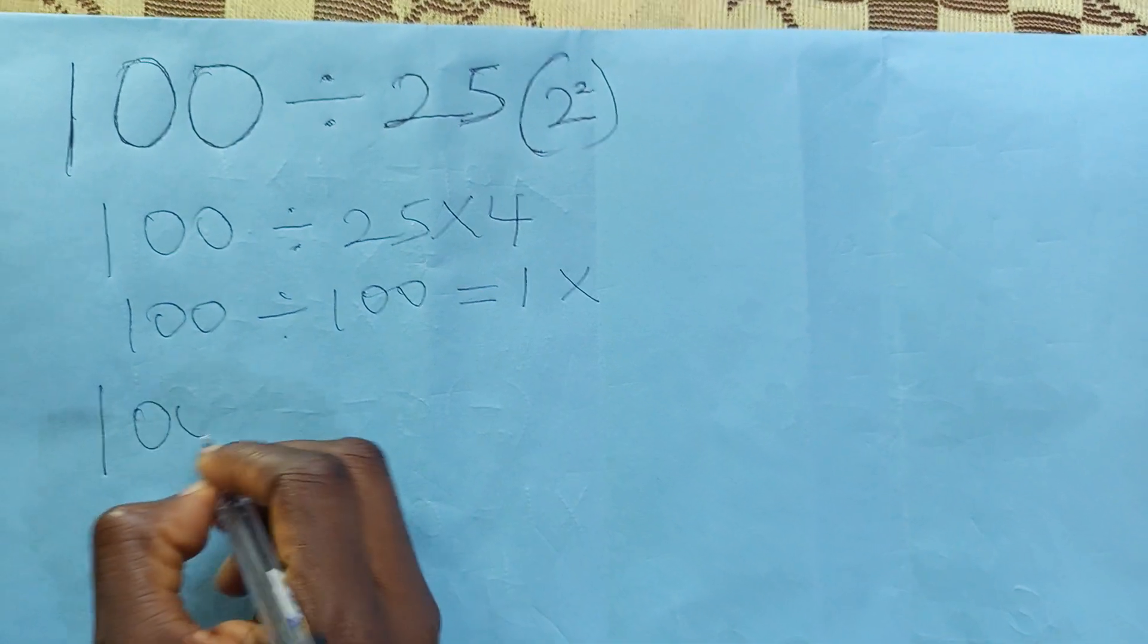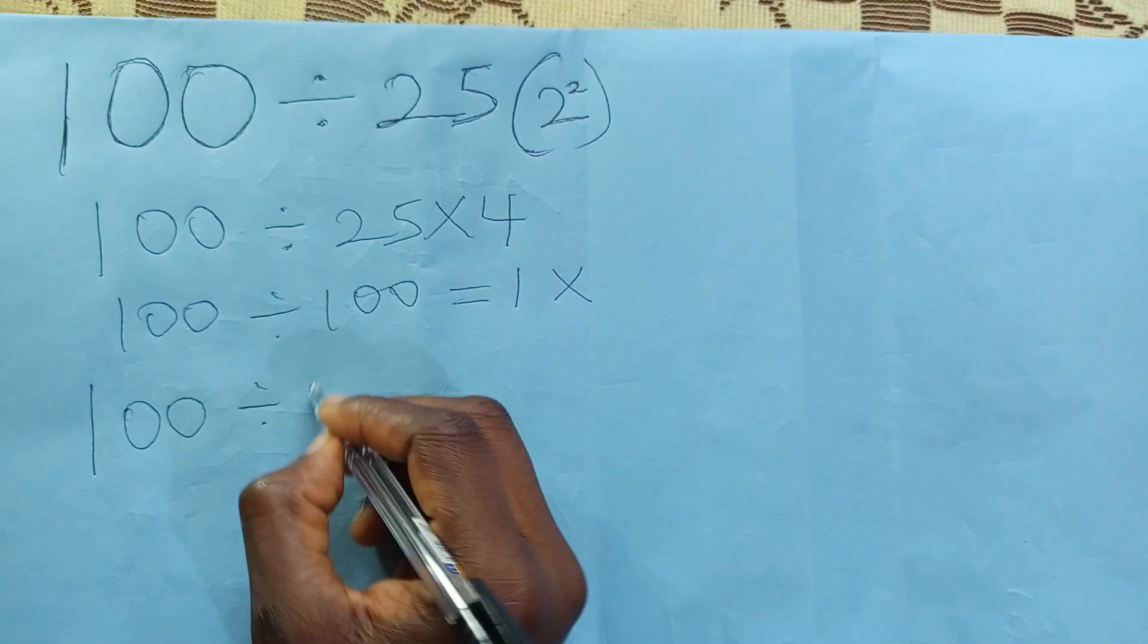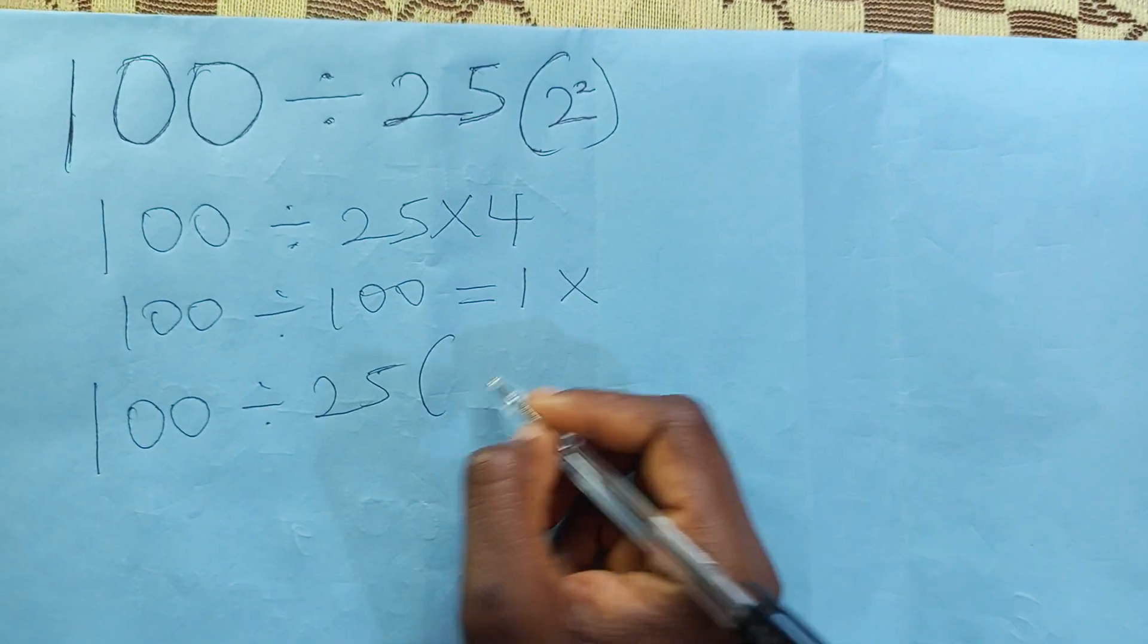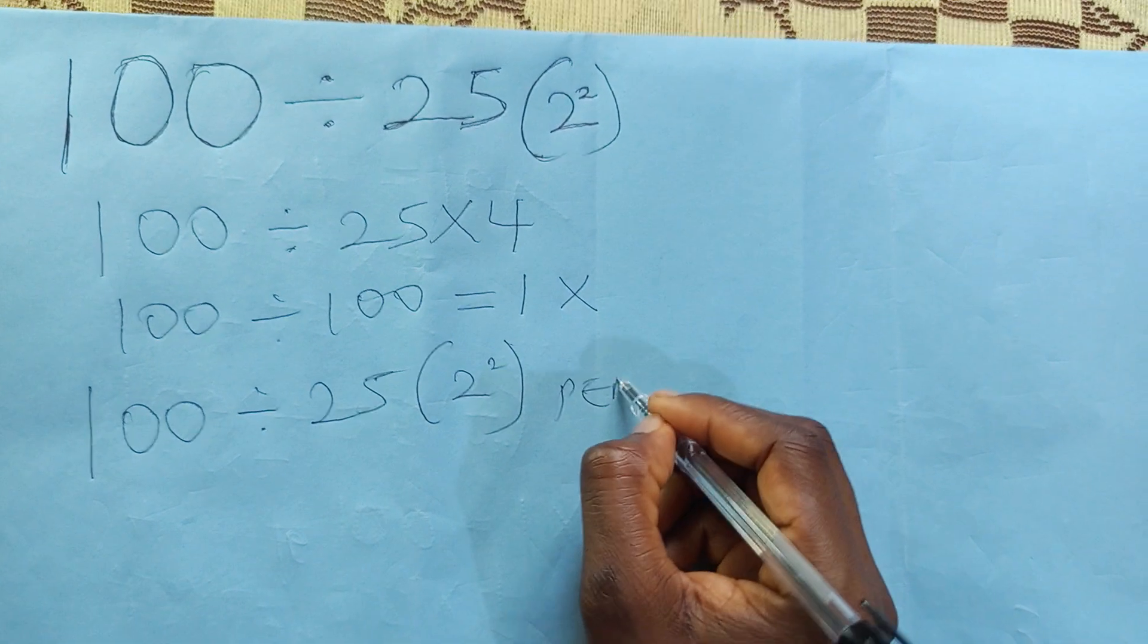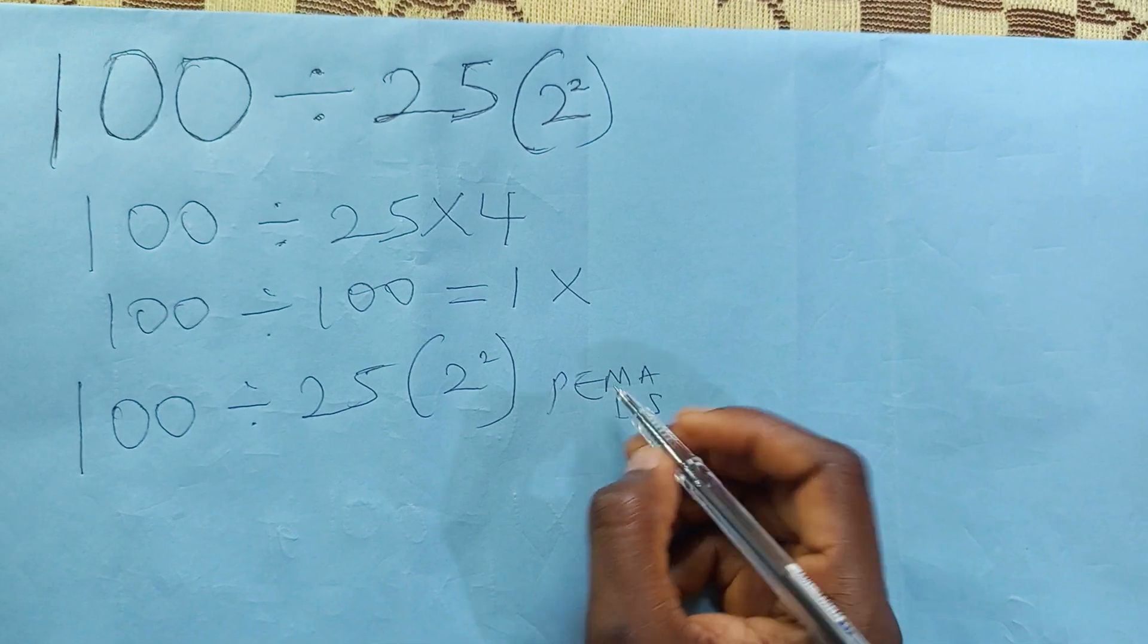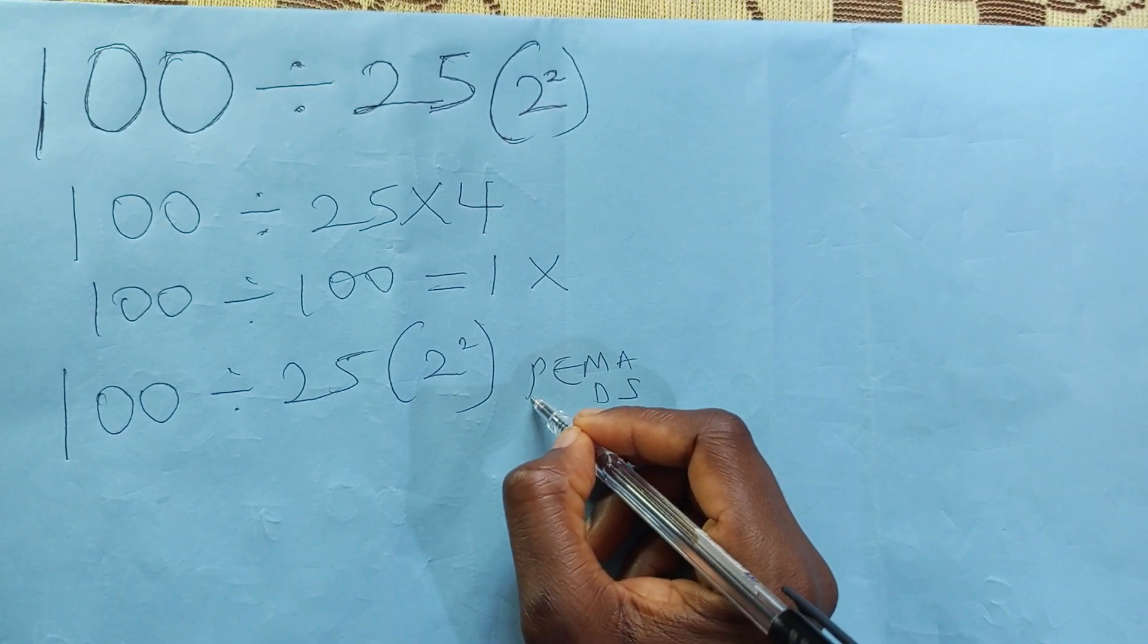I want to write the question again. 100 divided by 25, bracket 2 square. Following PEMDAS, parenthesis comes first,